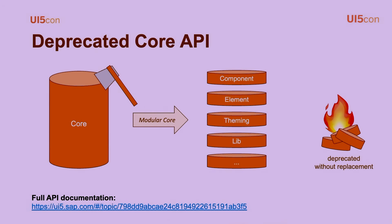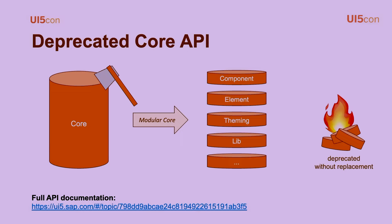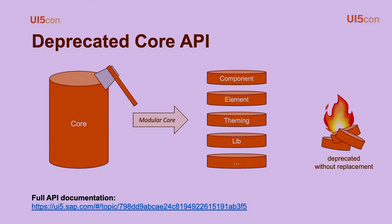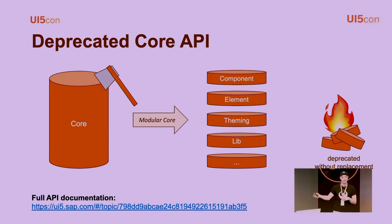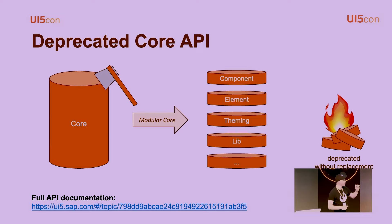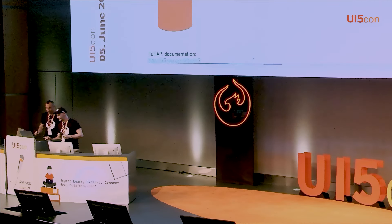Thorsten will now tell us more about the evolution of the core. What Javor showed was essentially how to migrate a 1.x application to a 2.x standard — migrating deprecated APIs to modern APIs. On the left side of this picture is the huge monolithic block previously called 'the core' — one giant god class that does everything, with a lot of APIs and dependencies. What we did was chop it down into smaller parts: the modular core. Now there are more modules, but they're all smaller, self-contained, with fewer dependencies and more lightweight. Examples include: component, element, theming, and lib — our library loader.